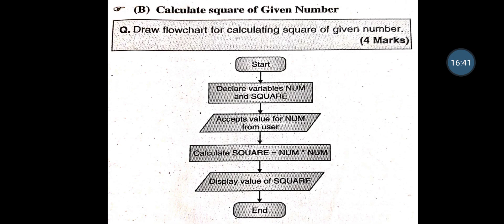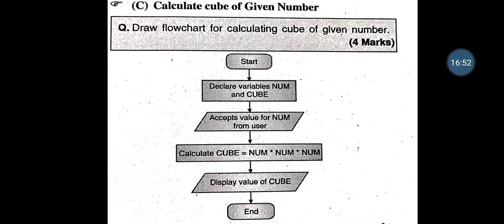Area of Square of a Given Number — Start, Declare the variable, Accept the value for Num, Calculate the Square, Display the result of Square, and End. Cube of the Number — Start, Declare variables Num and Cube, Accept the value for Num, Calculate the Cube = Num * Num * Num, Display the value of Cube, and End.